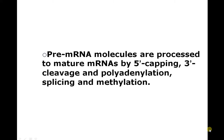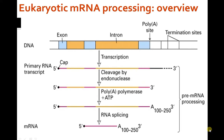Pre-mRNA molecules are processed to mature mRNA by 5' capping, 3' cleavage and polyadenylation, splicing, and methylation. This shows how exons and introns are arranged, the polyadenylation site, and the terminal transcription region. Poly-A polymerase adds ATP. This overall process is called pre-mRNA processing.